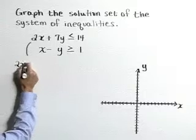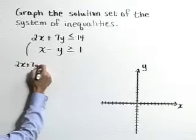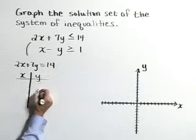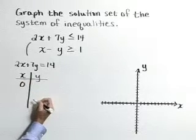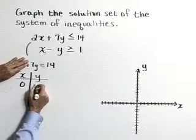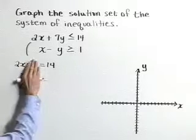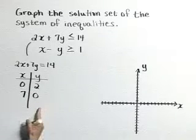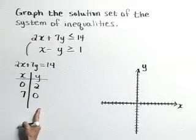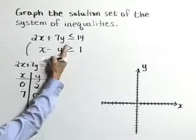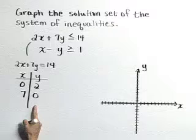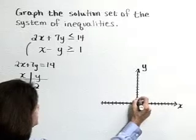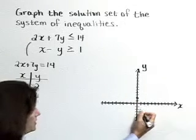We're going to graph the line 2x plus 7y is equal to 14 using an xy t-table and plotting intercepts. If we let x equal 0, then y is equal to 2. If we let y equal 0, then x is equal to 7. We'll graph this as a solid line because our inequality does include the equal sign, so we include points on the line. This line goes through the point (0, 2) on the y-axis and the point (7, 0) on the x-axis.